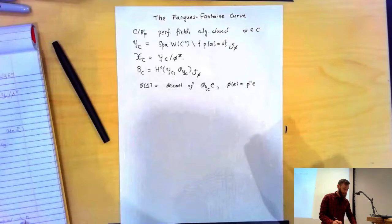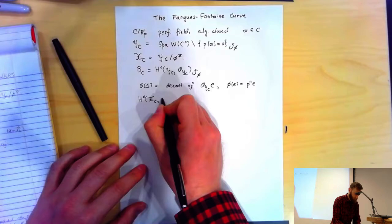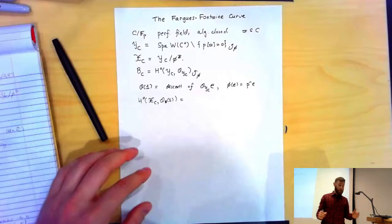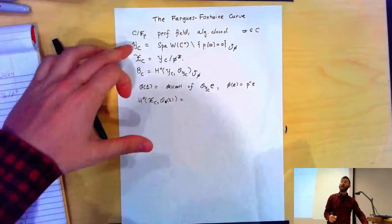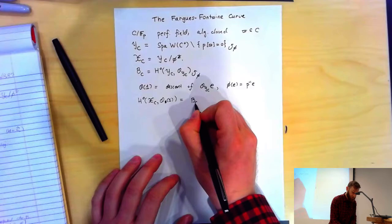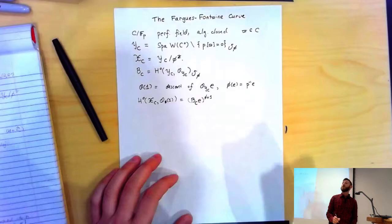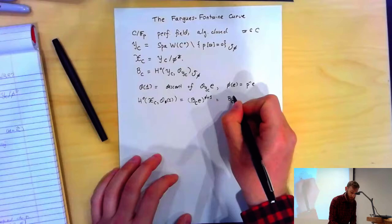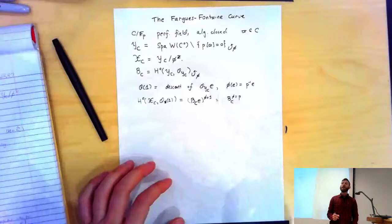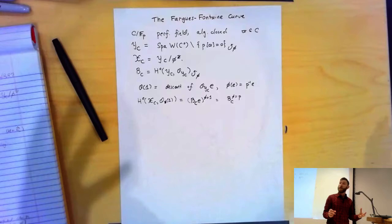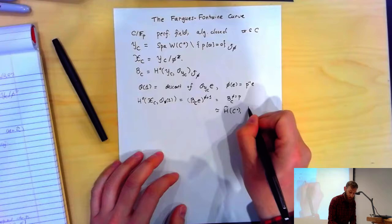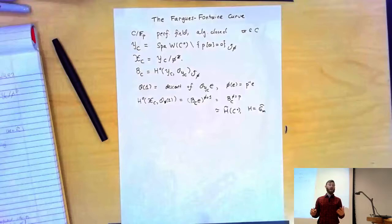I now have this vector bundle O(1). What are its global sections? This would be taking the φ-invariants inside the global sections on Y_C, which is just B_C · e — the part where φ equals 1 — which is the same as B_C^{φ=p}. We've already encountered this vector space. It's a really large Q_p vector space, isomorphic to H̃(C°) where H is the formal multiplicative group. Non-zero elements of this vector space give you untilts of the perfectoid field C.